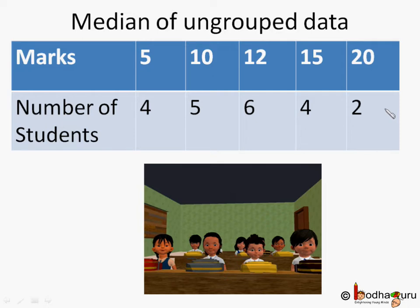21 is an odd number. So when we list their scores, the (N+1)/2 position — that is (21+1)/2, which is 22/2 — the 11th value will be the median. But can you tell the 11th value directly from this table?